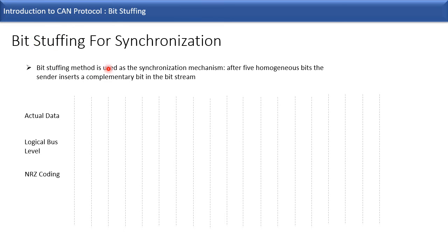Bit stuffing is used for CAN synchronization. The bit stuffing method works as follows: for every five homogeneous bits, the sender inserts a complementary bit in the bitstream. Homogeneous bits means same polarity bits — for every five same polarity bits, the next bit inserted will be of opposite polarity. We will see in the animation how bit stuffing actually works.